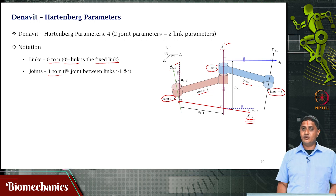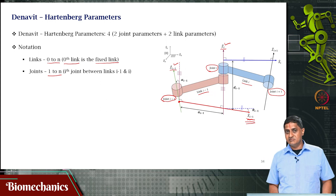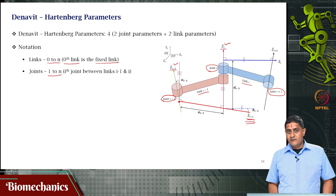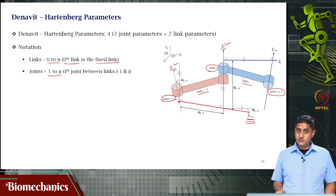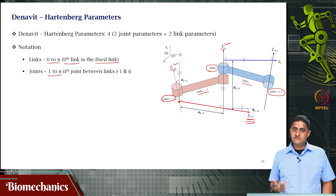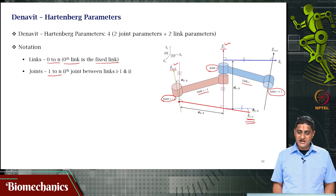How will you find the Y(i−1) axis? You use the right hand thumb rule: because you know the Z axis and you know the X axis, you can find the Y axis. Use the right hand thumb rule to find the Y(i−1) axis.